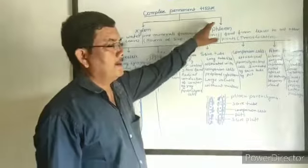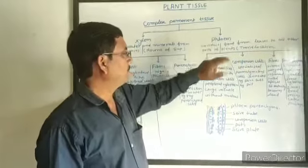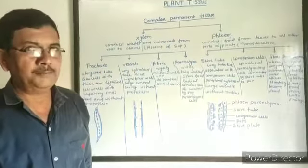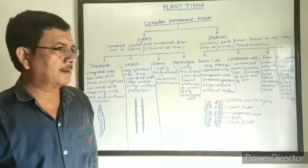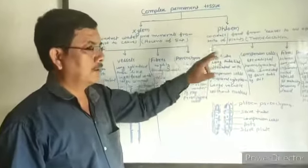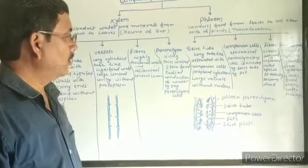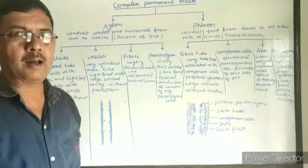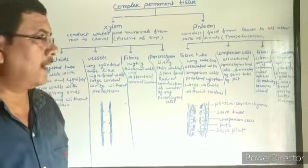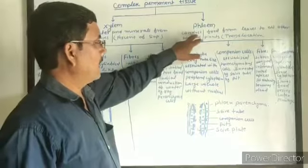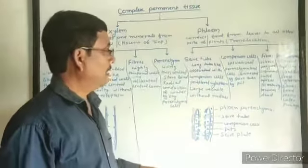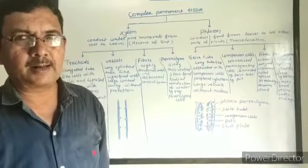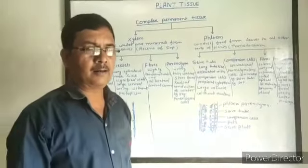The next complex permanent tissue is phloem. Phloem conducts food from leaves — usually from leaves to all other parts of the plant. Some other green parts also synthesize food, so phloem conducts food from the place of synthesis to all other parts of the plant where it is utilized. This process is called translocation, meaning phloem is concerned with translocation of food.